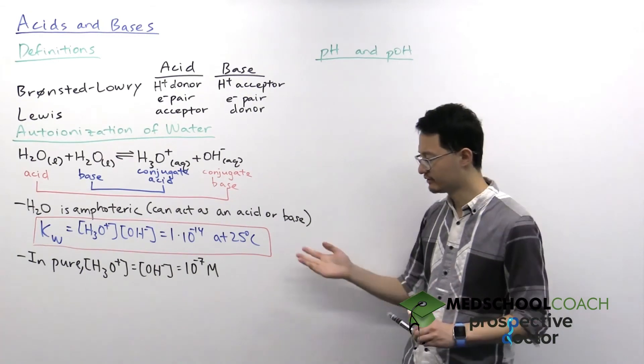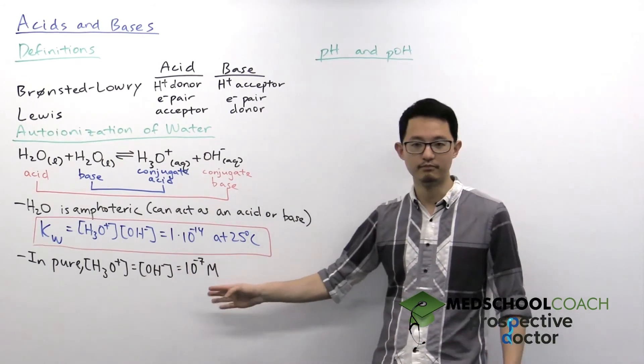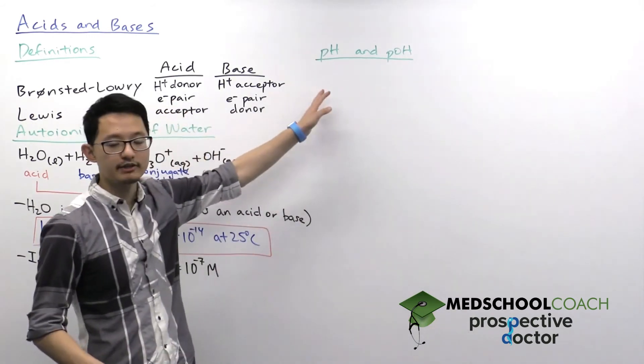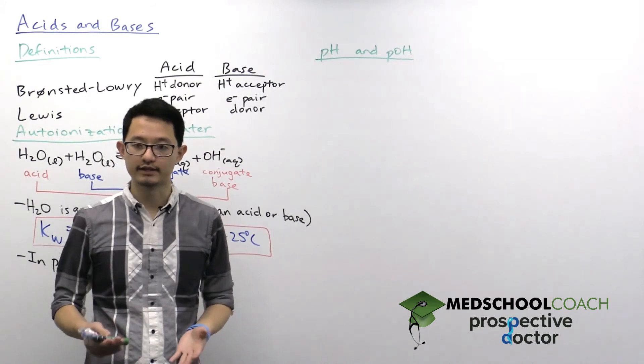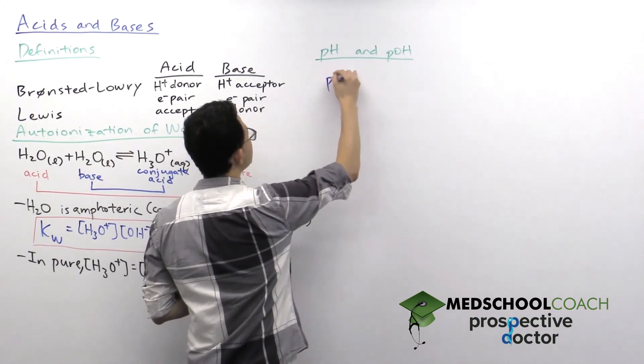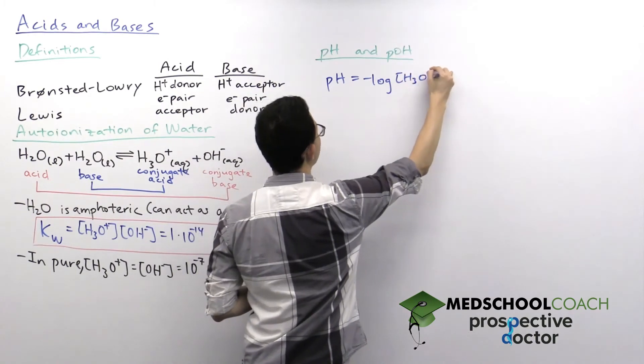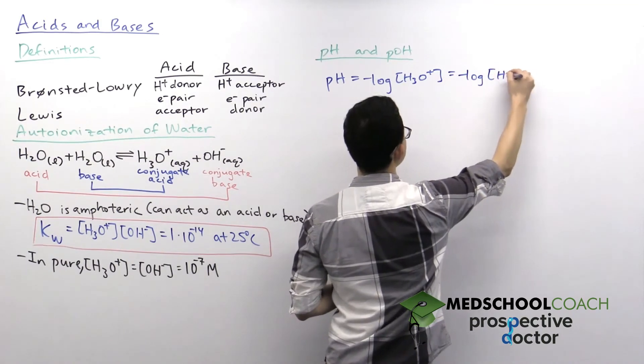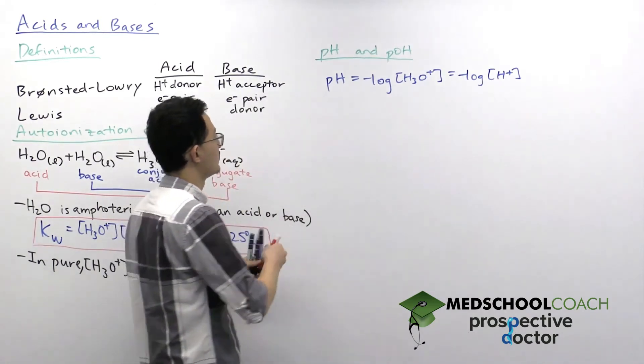However, we generally don't report the amount of hydronium ions and hydroxide ions with molar concentrations. Generally, what we use is pH and pOH. So you will need to know how to calculate these values for MCAT and we have equations for both. So we have pH is equal to negative log of the hydronium ion concentration. Sometimes people just write negative log of H plus. So it doesn't matter which one you see, hydronium or just hydrogen ion. It's the same thing.